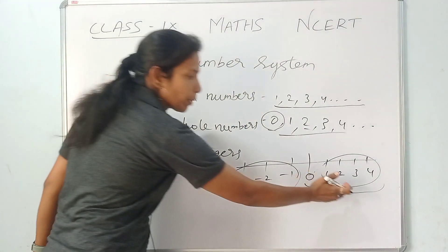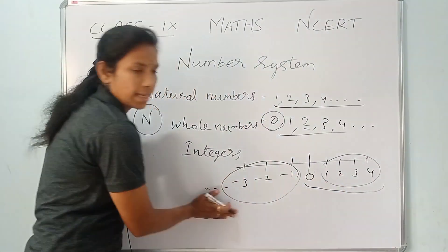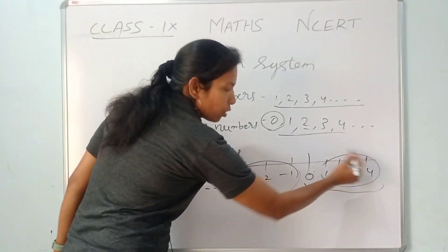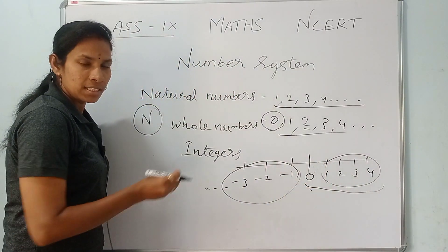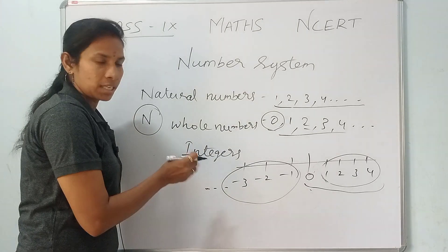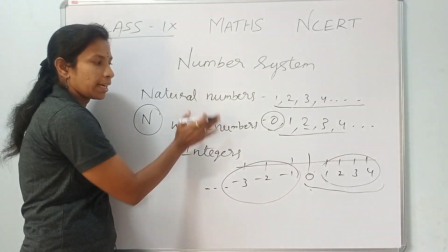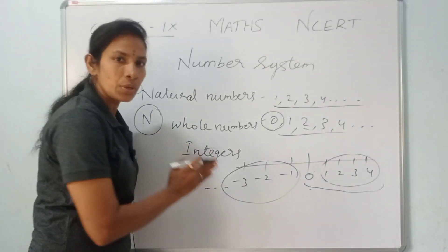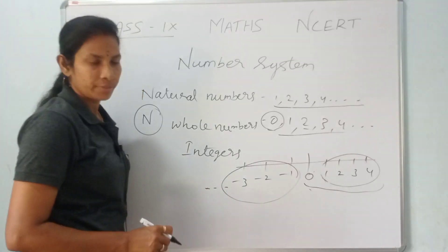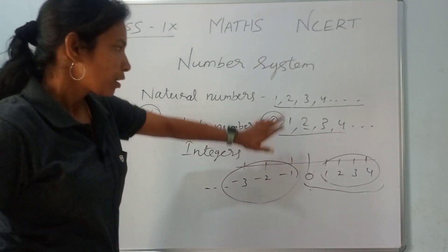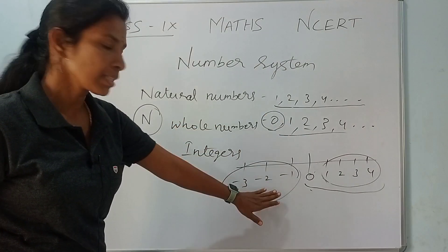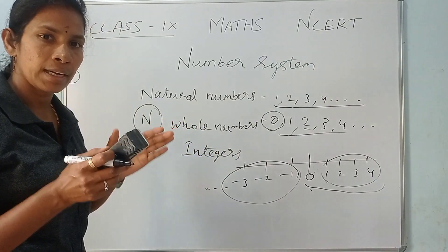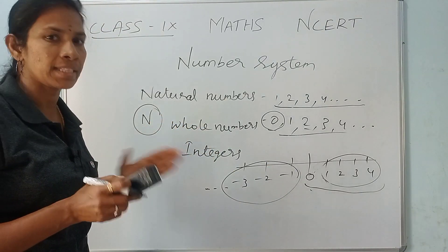So to summarize: integers include both positive numbers and negative numbers. Whole numbers start at zero. Integers have both positive and negative numbers. This covers natural numbers, whole numbers, and integers — these are the basic number types.